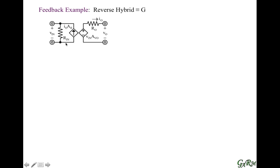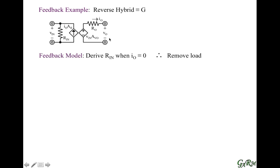Let's start with R_n, the input resistance. When we derive the input resistance, we need to nullify the effects of the current source at the input. We look at the signal that controls it — that's the output current — so we need to make sure that the output current is zero. For the output current to be zero, the output needs to be open circuited, so we remove the load. This is an open circuit test, and specifically a forward open circuit test because we're applying the test condition to the right of the circuit, at the output.